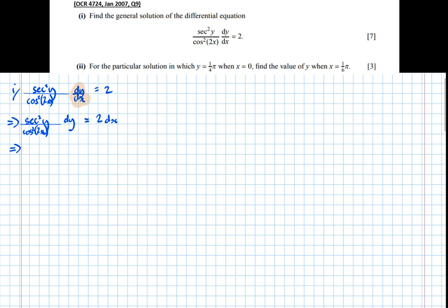So the top line implies that. Next line. So what I'm going to do now, the dy needs to be on the same side as all the y's, and the dx needs to be on the same side as all the x's, in order for us to be able to integrate properly. So we're going to multiply by cos squared of 2x to get it on the same side as the dx. So sec squared y dy equals 2 cos squared of 2x dx.